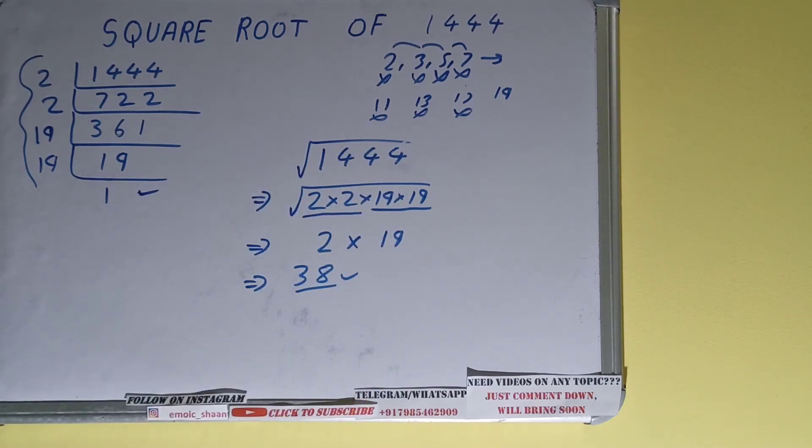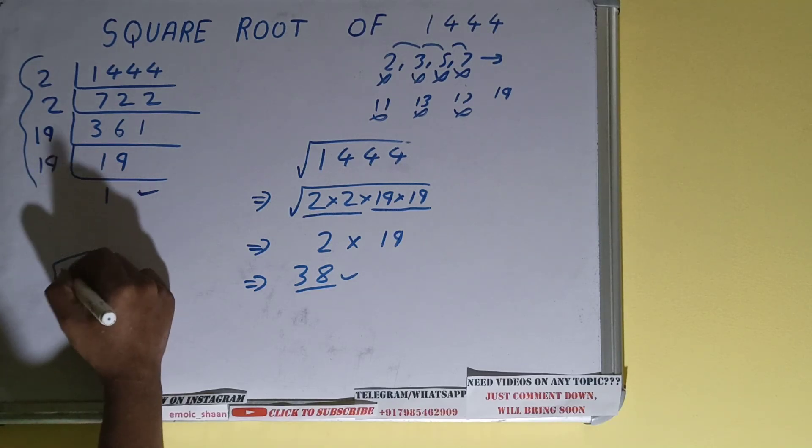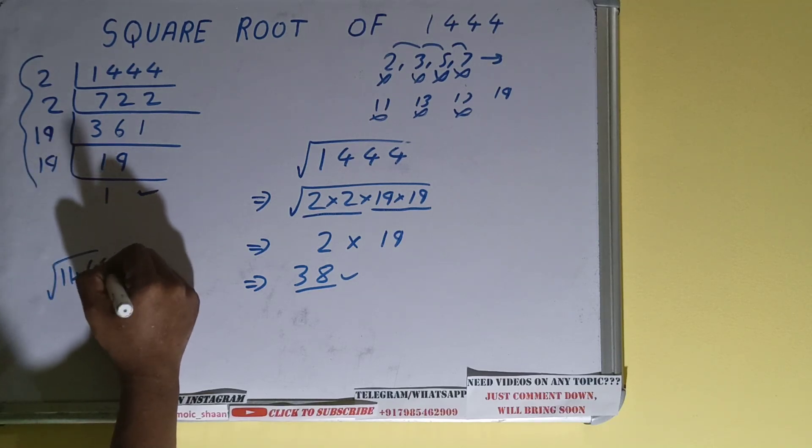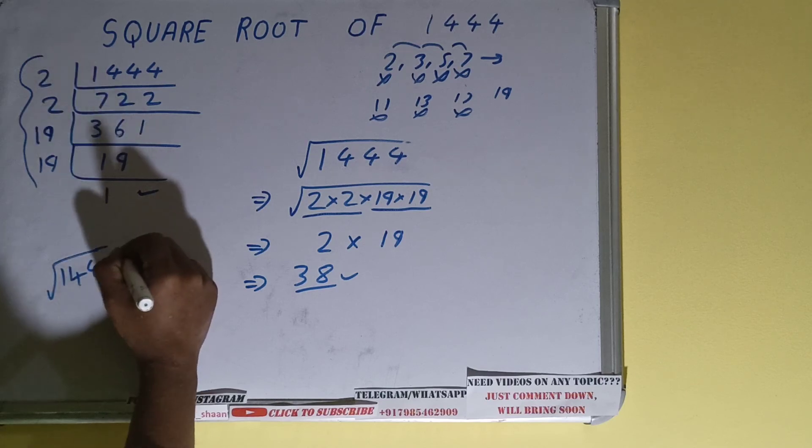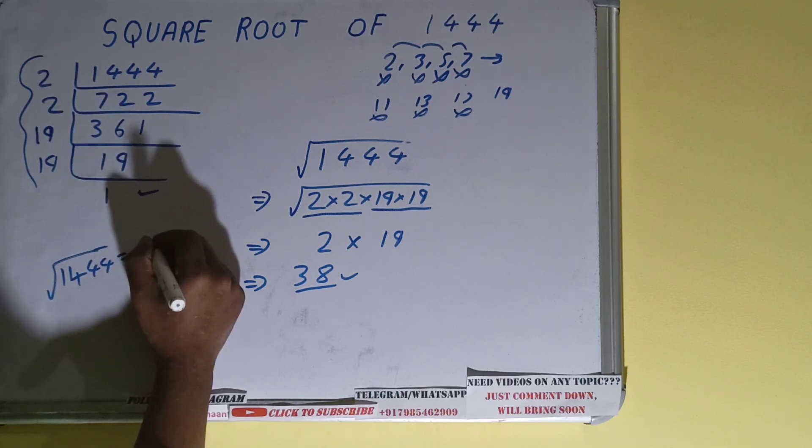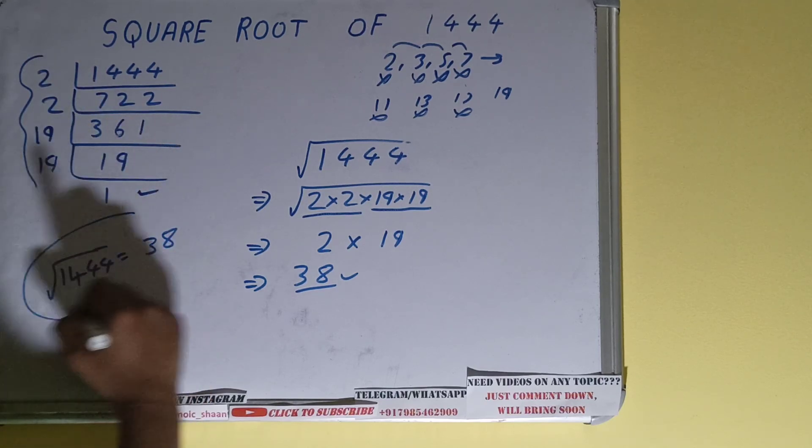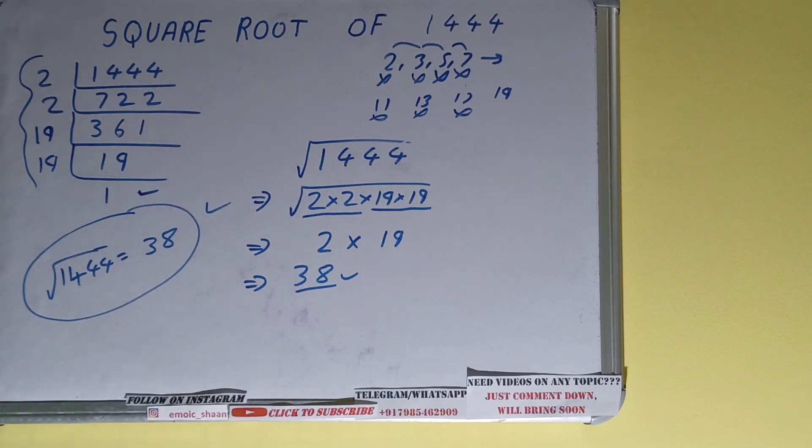And you can also write it like this: 1444 is equal to 38 squared. Square root of 1444 is equal to 38. So this is all. If you found the video helpful, please hit the like button, do consider subscribing, and thanks for watching.